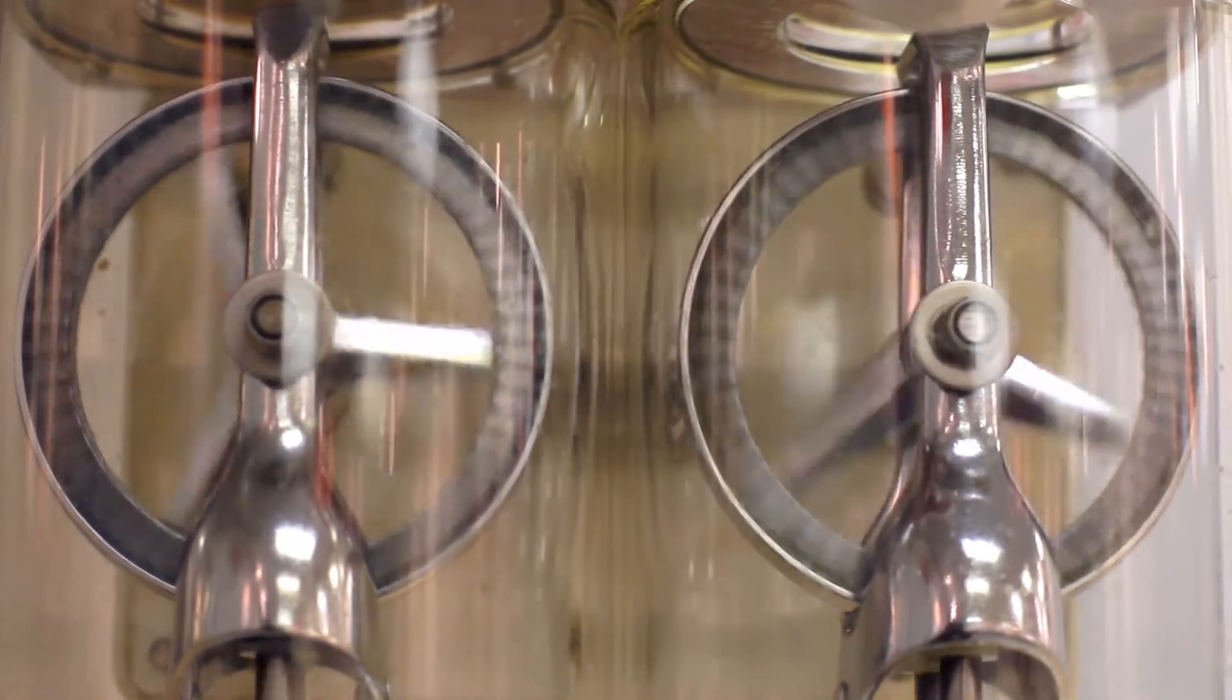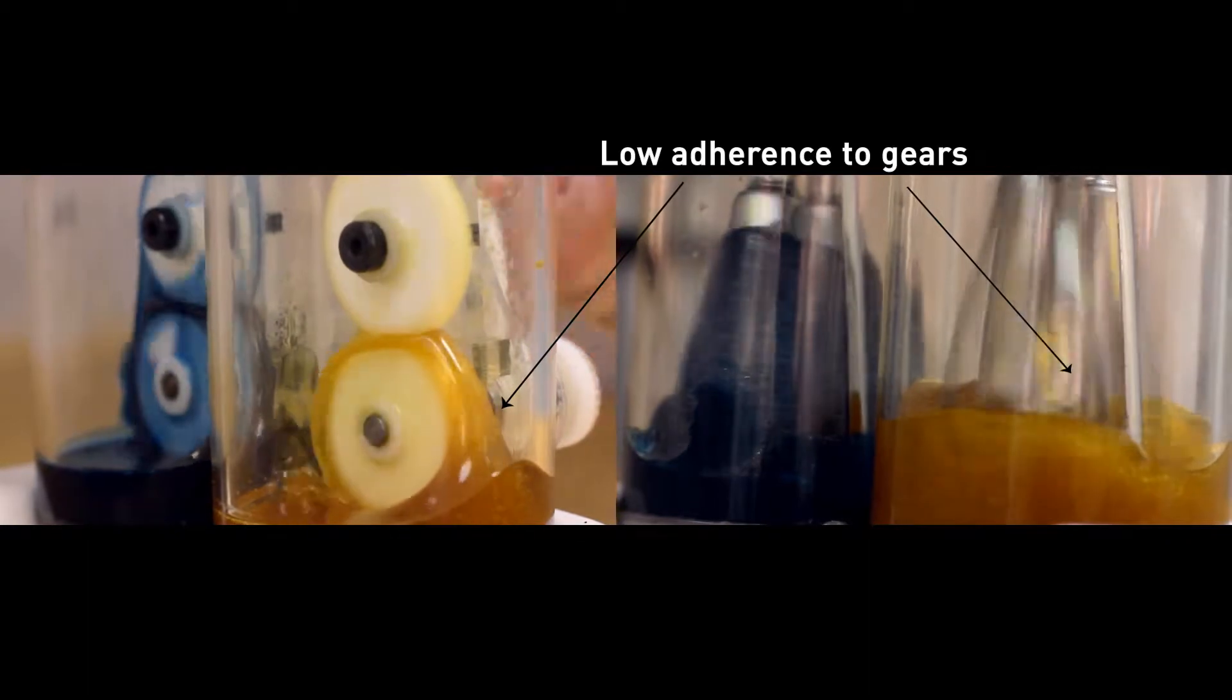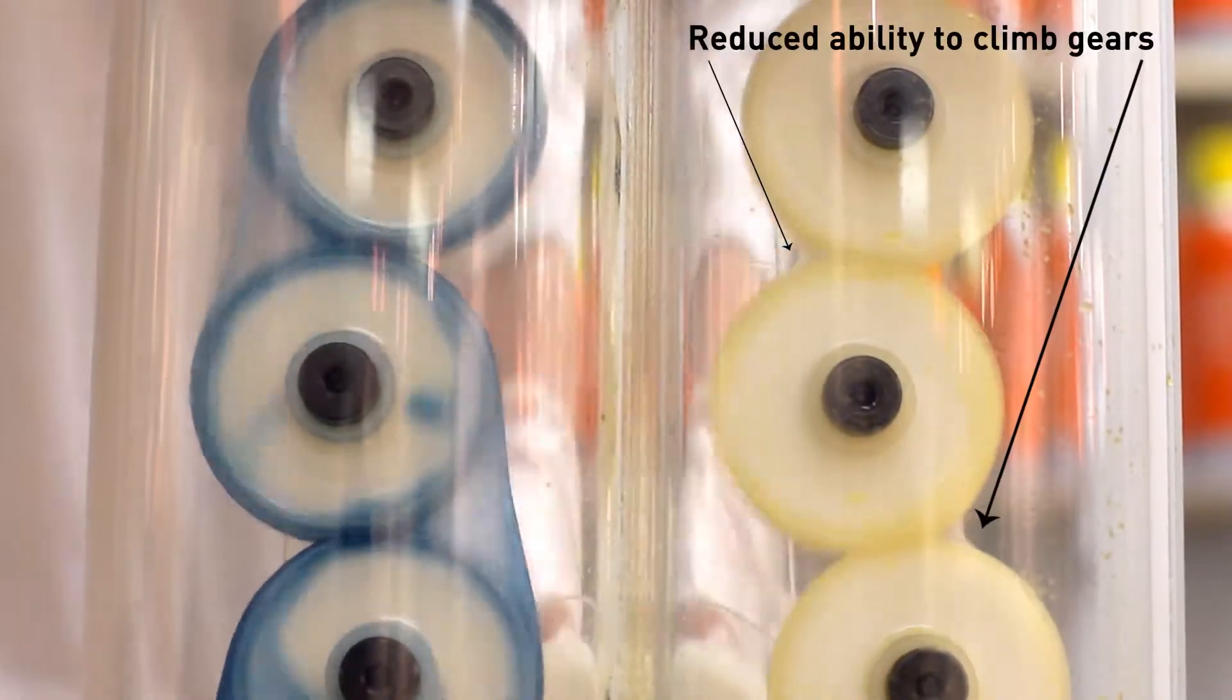Observe how the competitor's product exhibits low adherence to gears, reduced ability to climb the gears, high fling off, and high level of foaming.